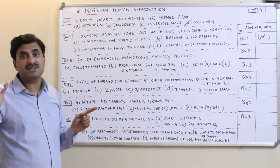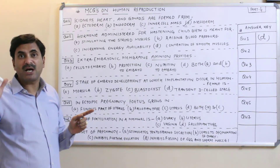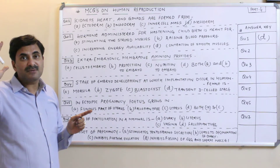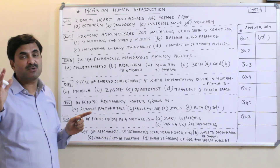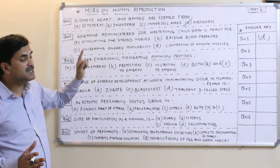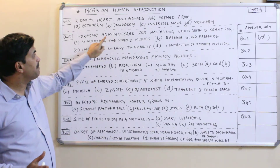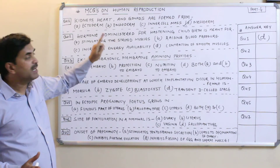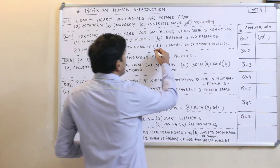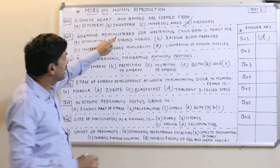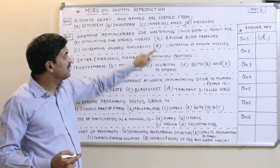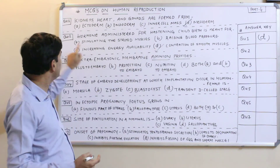The smooth muscles of the uterus are found in the middle layer known as the myometrium — you know: perimetrium, myometrium, and endometrium. The smooth muscles contract due to oxytocin, and that is why the child is delivered. So the hormone administered for hastening childbirth is meant for contraction of smooth muscles. Question number two answer is D.